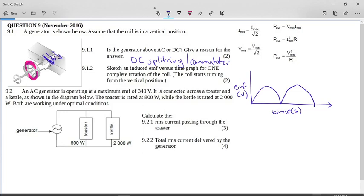Okay, now it says to you an AC generator is operating at a maximum EMF of 340 volts. It's connected across a toaster and a kettle as shown in the diagram below. Well, you can clearly see that this is a parallel circuit. The toaster is rated at 800 watts while the kettle is rated at 2000 watts.